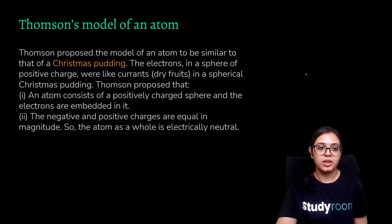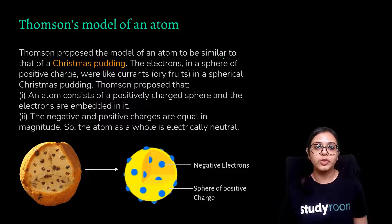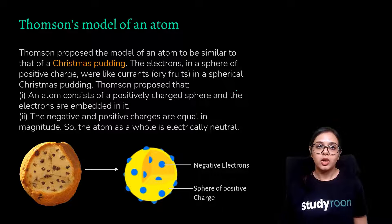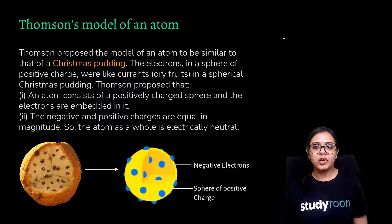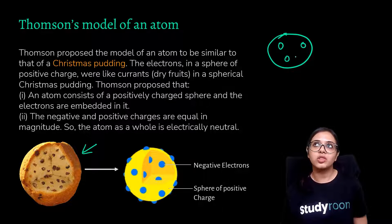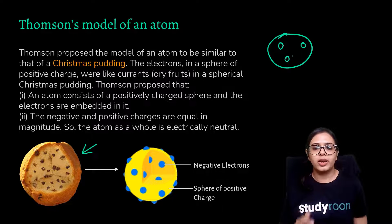Thomson's model of an atom: Thomson proposed the model of an atom to be similar to that of a Christmas pudding — the electrons in a sphere of positive charge, like dry fruits in a spherical Christmas pudding. What Thomson proposed is that a Christmas pudding is like a small dry cake structure in which dry fruits are visible. You can imagine this as a small chocolate cookie ball in which the chocolate pieces are visible.